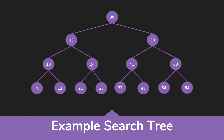If we look at an example of a binary search tree, we have 30 as the root. Everything in the left subtree is smaller than 30, and everything in the right subtree is larger than 30. Then if we look at the left subtree, the 18 is larger than everything to its left and smaller than everything to its right. And each of these subtrees, this is true. So this would be a binary search tree.